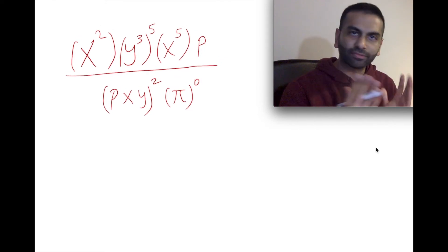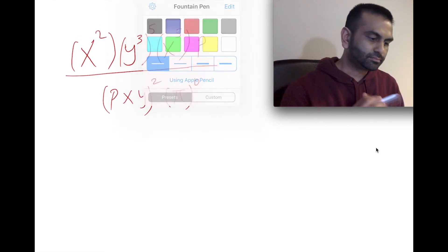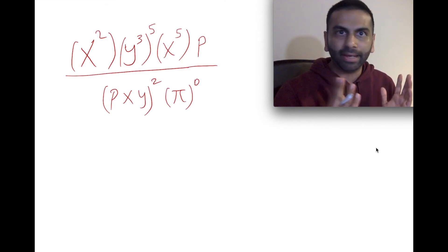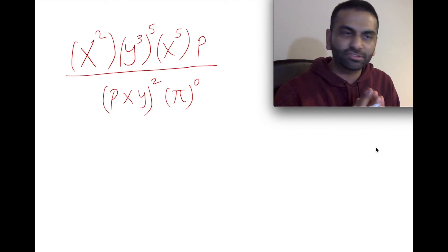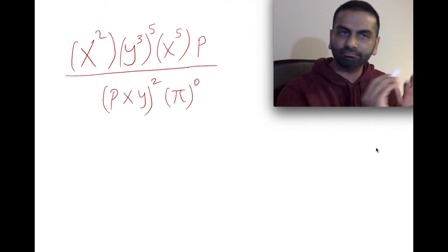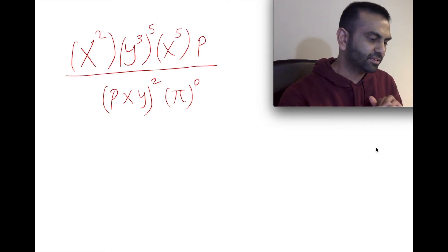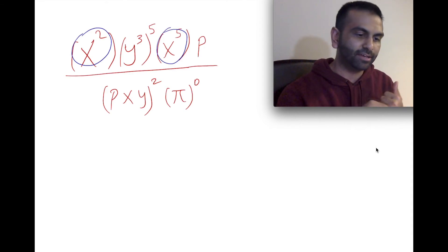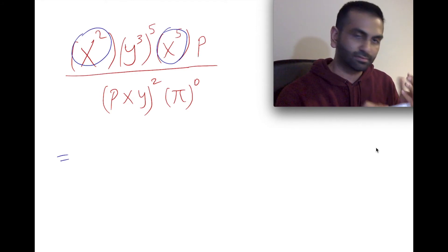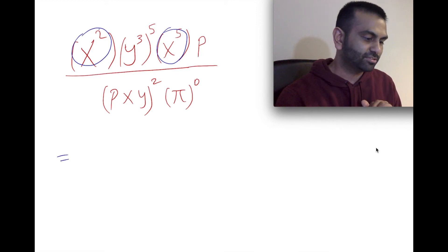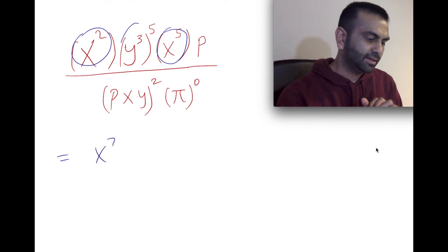Looking at this, step one: don't panic. Let's just break it down turn by turn. First let's focus on the top, and specifically the x's. There's an x squared and an x to the fifth being multiplied, so we add the exponents. Two plus five gives seven, so that's x to the seventh so far.